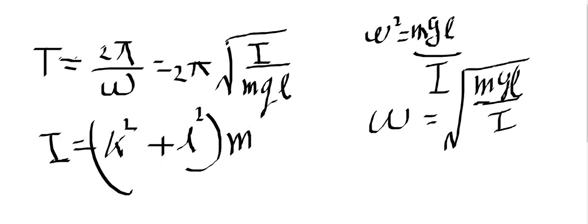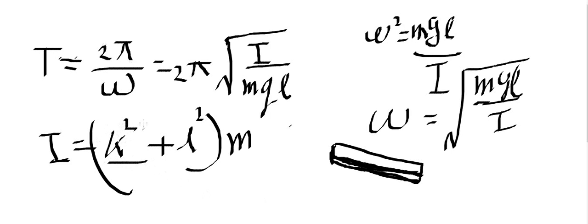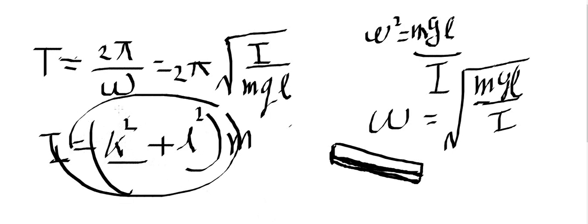k squared is the radius of gyration term. I honestly don't know where this gyration term came from in this context. I will surely make another video about this after I find out what caused them to write such equations like this that don't make sense to me right now. So let's just pretend for now that I equals m times (k squared plus L squared).